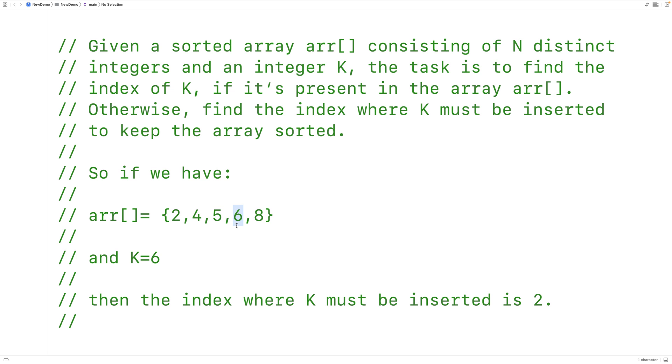So basically, what we have to do is search through the array from the left to the right. Once we find the element that is either equal to K or greater than K, we know K is either at that spot or it has to be inserted at that spot.